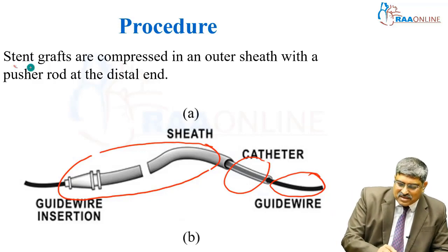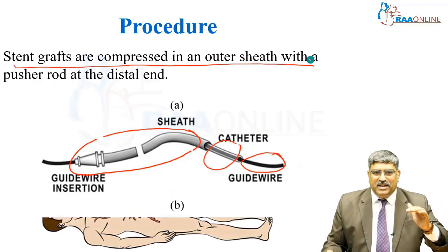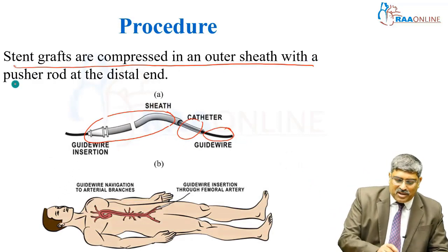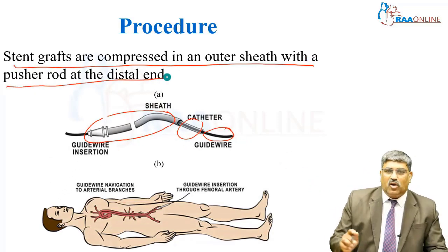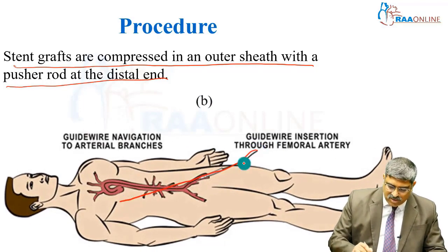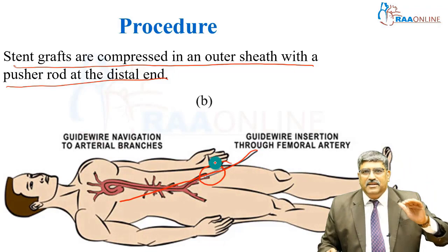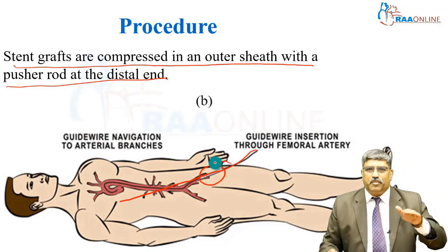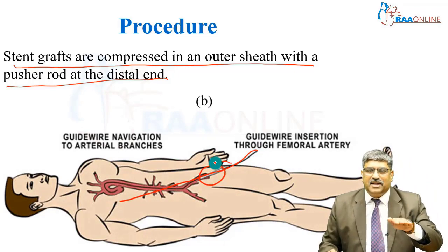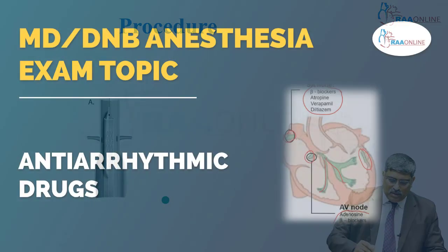The endograft is compressed in the outer sheath with the pusher rod at the distal end. First the guidewire goes in, next the sheath goes in, then the stent is placed via the guidewire inside the sheath, and then the sheath is removed.